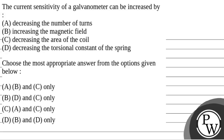Hello, Batcho. Let's read the question. The question says that the current sensitivity of a galvanometer can be increased by: decreasing the number of turns, increasing the magnetic field, decreasing the area of the coil, or decreasing the torsional constant of the spring.